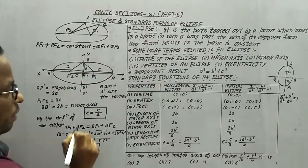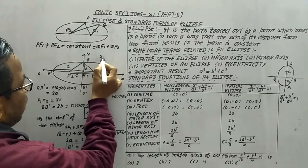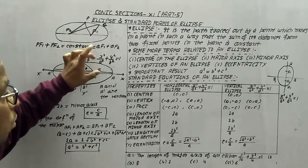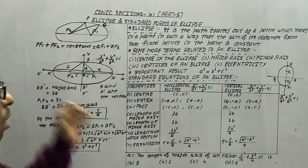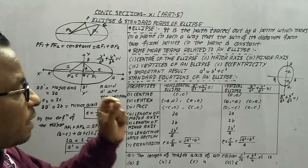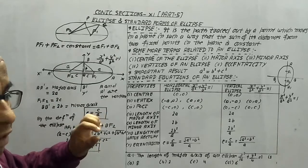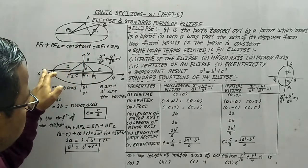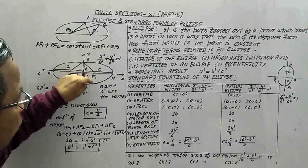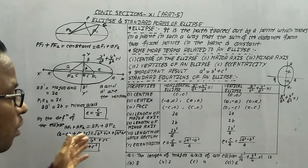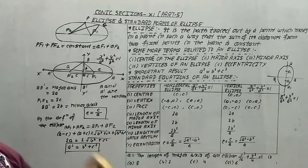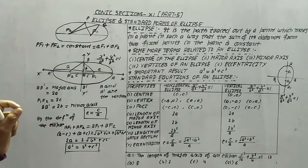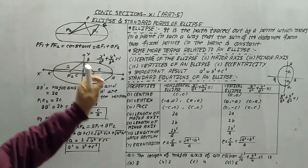The question is how this standard form is derived. Also, one more term: latus rectum is the line segment which passes through the foci and is perpendicular to the major axis. Later we will calculate the length of the latus rectum. Now let's develop x²/a² + y²/b² = 1.